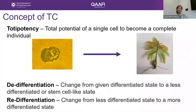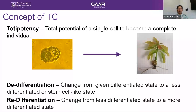I will talk to you about what is totipotency. It's the concept or phenomenon that every single cell has the potential to grow into an individual plant or individual organism. We also discuss two different terminologies within tissue culture: de-differentiation and re-differentiation. De-differentiation is where in tissue culture we take differentiated cells and change their state into a lesser differentiated or stem cell-like state. Re-differentiation is the other way around, where undifferentiated cells change to more differentiated forms.